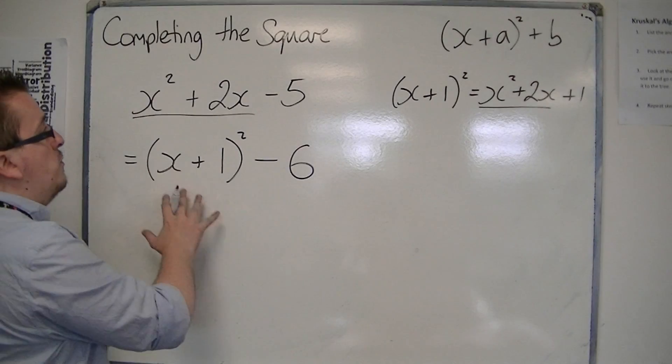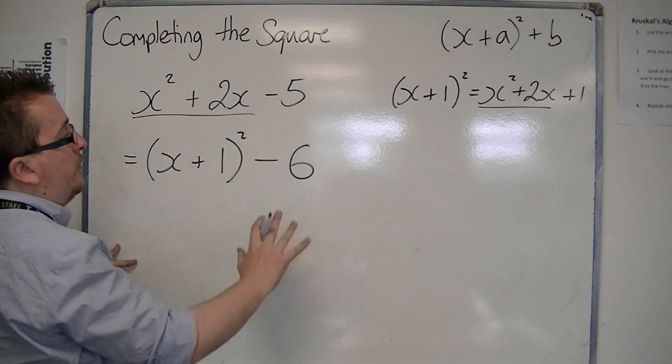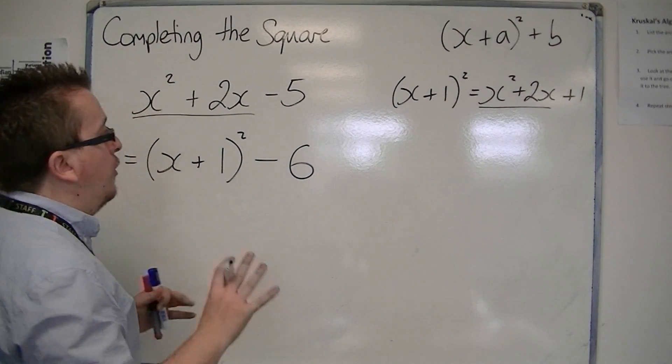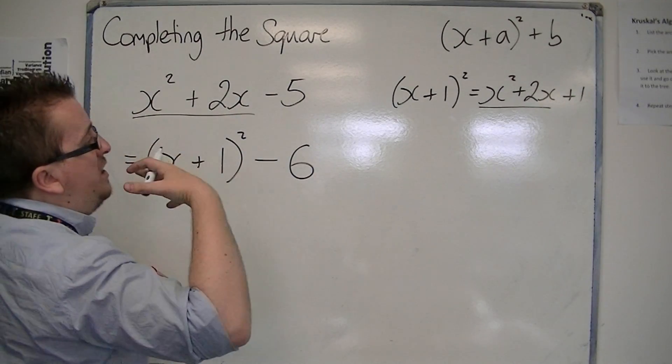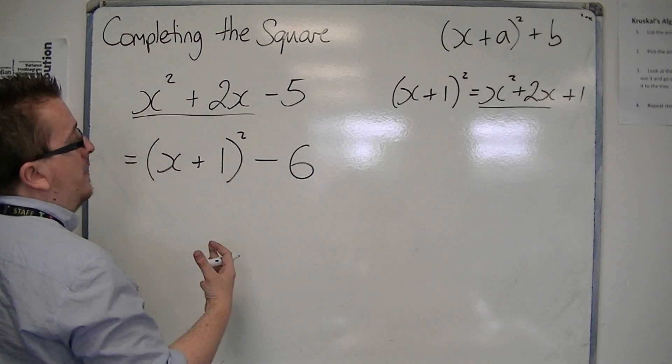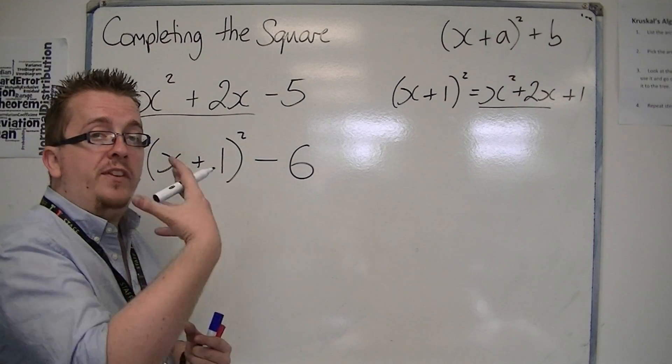So that is how you can write this expression in completed square format. It's a case of expanding the bracket, the (x + 1)² bracket, noticing that you would get +1, needing -5, so you have to take away 6.